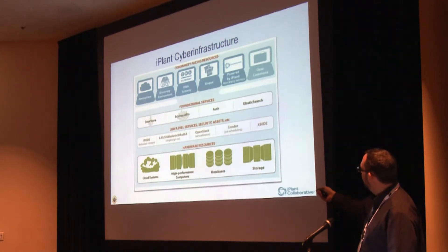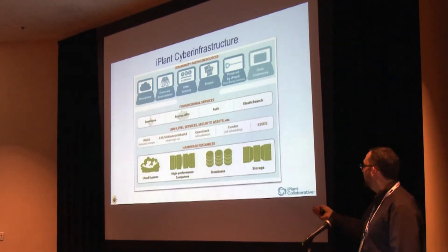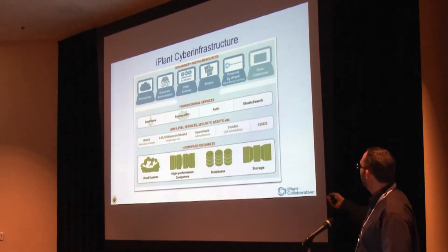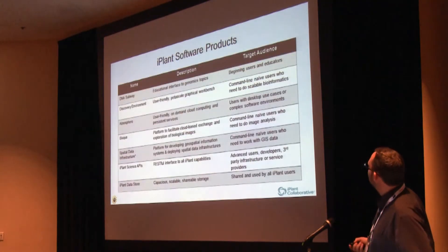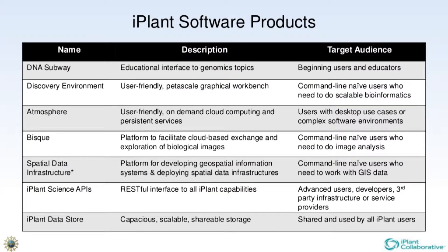We use this stack to build community-facing resources — things that many of you think of when you think of iPlant: the Discovery Environment, Atmosphere, the DNA Subway, et cetera. They're also the basis for third parties who build things based on iPlant. iPlant provides high-quality software products designed for different classes of users. The DNA Subway is for beginning users; the Discovery Environment is a graphical workbench for folks relatively naive to the command line but with computational needs; Atmosphere is user-provisioned cloud; BISQUE is an image analysis platform; and a spatial data infrastructure workbench is coming in the next couple of years. The iPlant data store underlies all of this — scalable, capable, replicated storage.